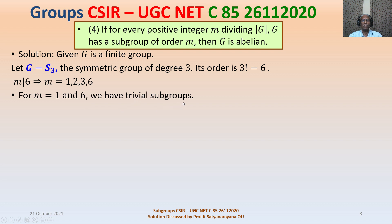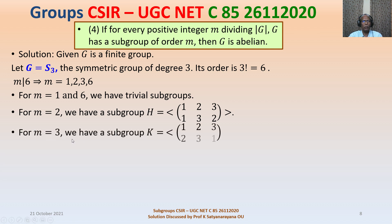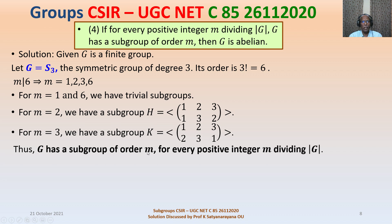For M = 1 and M = 6, we have the trivial subgroups: the identity element alone and the whole group. For M = 2, we have a subgroup H generated by the permutation (1 2 3) → (1 3 2), which fixes 1 and flips 2 and 3 — a subgroup of order 2. For M = 3, we have subgroup K generated by the cyclic permutation (1 2 3) → (2 3 1), which is of order 3. Thus G = S₃ has a subgroup of order M for every positive integer M dividing |G|, but S₃ is non-abelian.